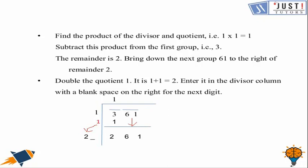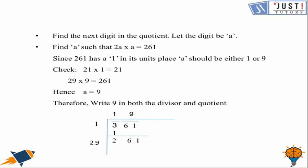Now we need to find which digit, when placed in the blank space, multiplied by the resulting number, gives us a product less than or equal to 261. When we check, we find that 29 multiplied by 9 equals 261. So we write 9 in the blank space and also above as the next quotient digit. We write 261 below 261 and subtract.